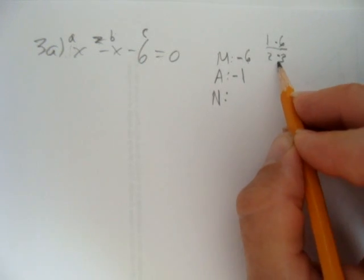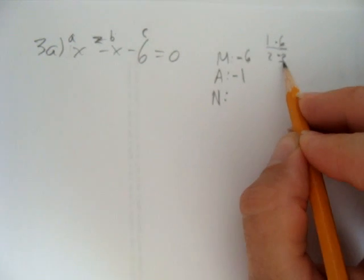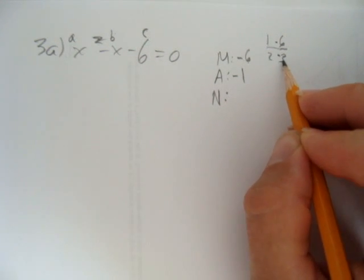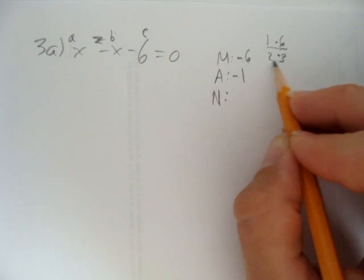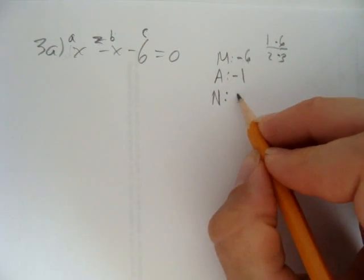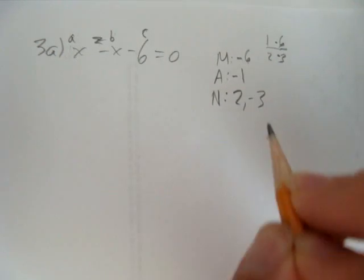However, 2 times negative 3 gives negative 6, and 2 times negative 3 is negative 6, yeah, I said that. But 2 plus negative 3 adds to negative 1, so I'm good. I've got these numbers.